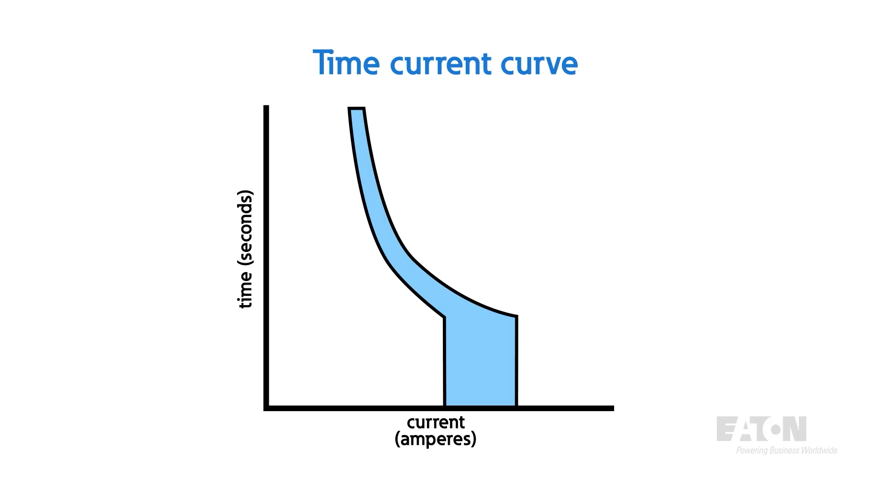So, the way to read it is, under x amount of current, this device will open the circuit in y seconds. You can see the general trend that lower currents will take longer to trip than faster ones.